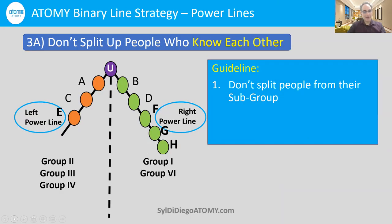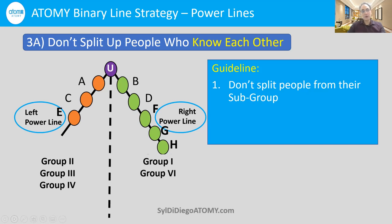Let's say you have people on your left side and your right side, and things are going very well. With your family on the right side, they're getting very excited because you have lots of cousins and relatives who love the products. In Atomy, you have to have a certain amount of PV on your left side and your right side to get your $60 check — that's 300,000 and 300,000 in total.